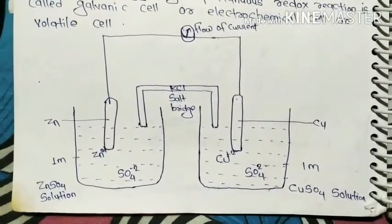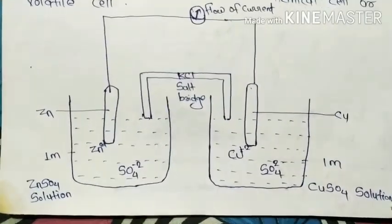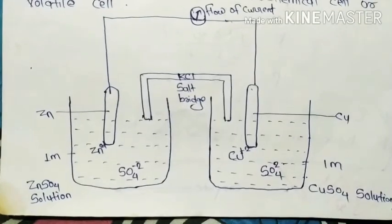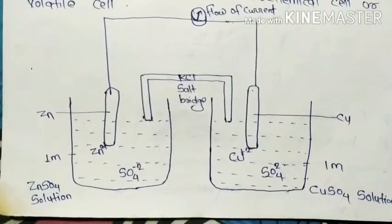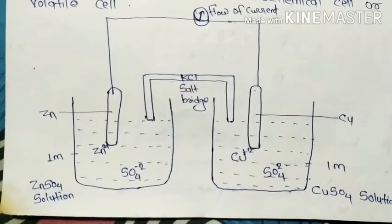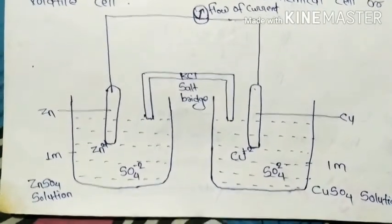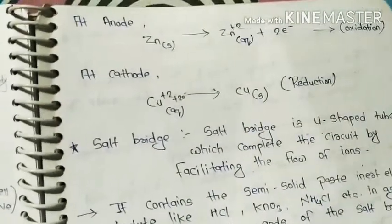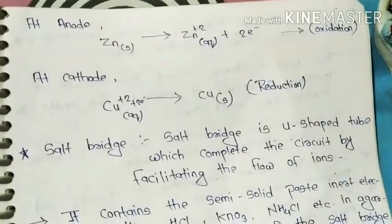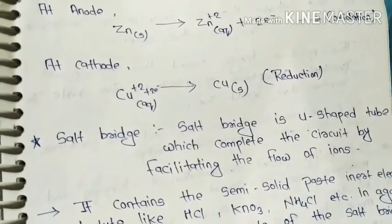First of all, zinc electrode. At zinc electrode, zinc electrode will be oxidized. Let me write this reaction. Zinc converts to Zn²⁺ plus two electrons. Two electrons lose, so oxidation occurs at anode.